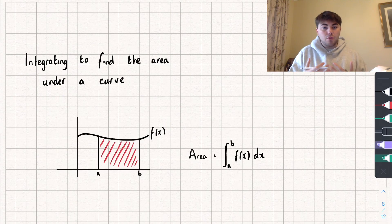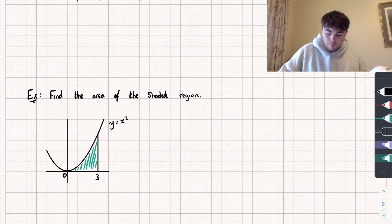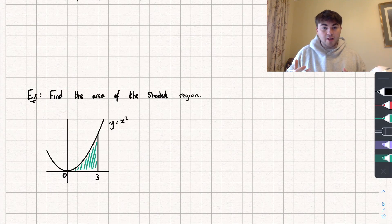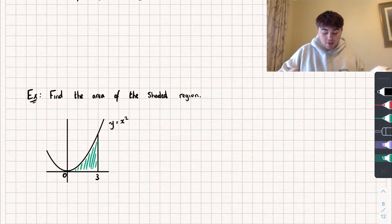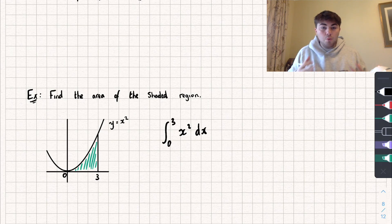I'm going to work through three different examples — I'll timestamp each one below — and each one will get a little bit harder. We'll start with the first example where we want to find the area of this shaded region: the area below the curve y equals x squared between the points x equals 0 and x equals 3. That area is going to be given by the definite integral between 0 and 3 of x squared with respect to x.